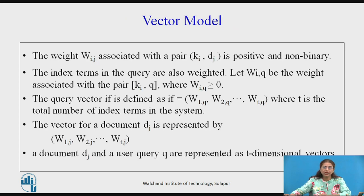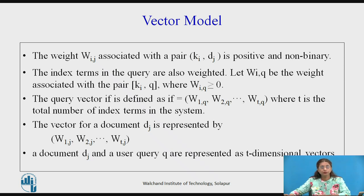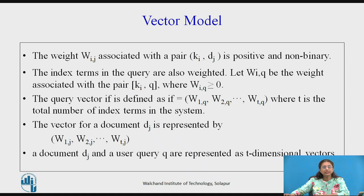In the Boolean model we have seen that there is no notion of partial matching, since the weights are binary we are getting a result either relevant or non-relevant. That is giving you too many documents or it is giving you exact matching. So how can it be improved in the vector model? That is why the weights are considered as non-binary weights and positive weights.